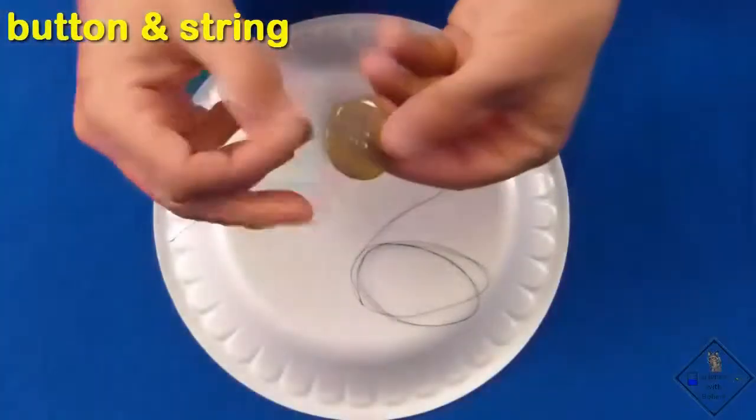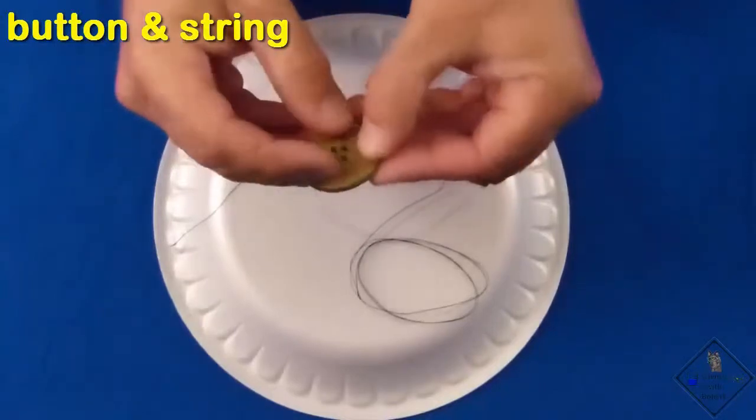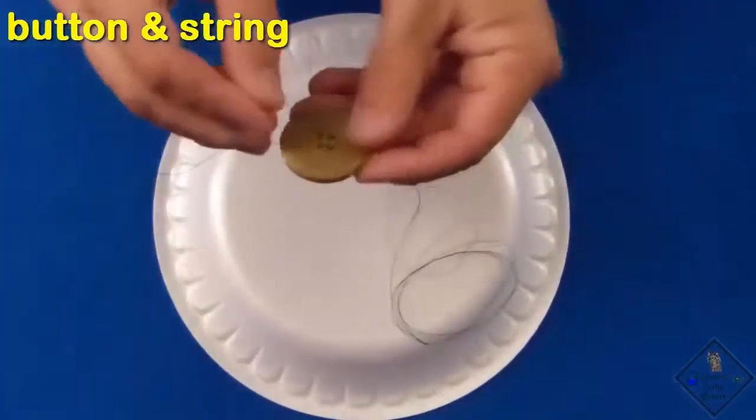Dr. Smith can make a button spin extremely fast using angular momentum. Dr. Smith has about four feet of thin, strong string and a large button.